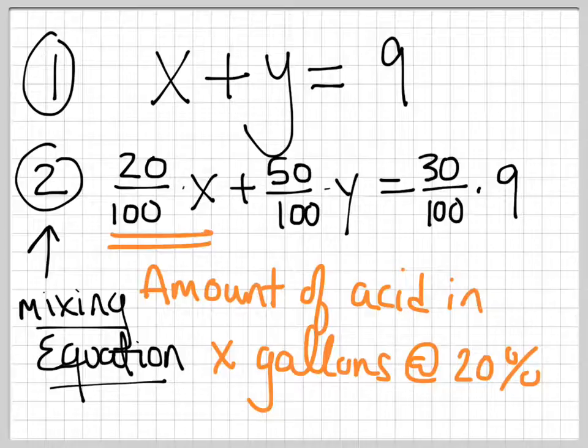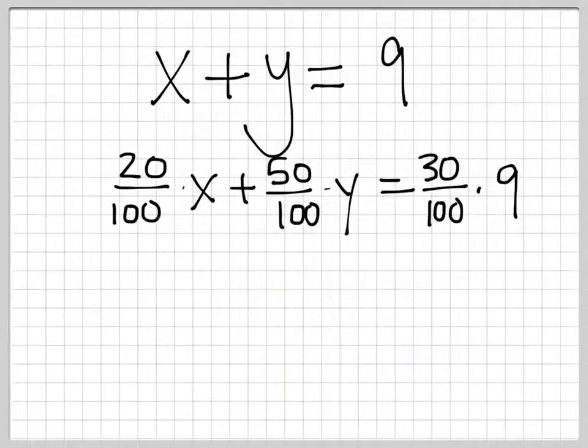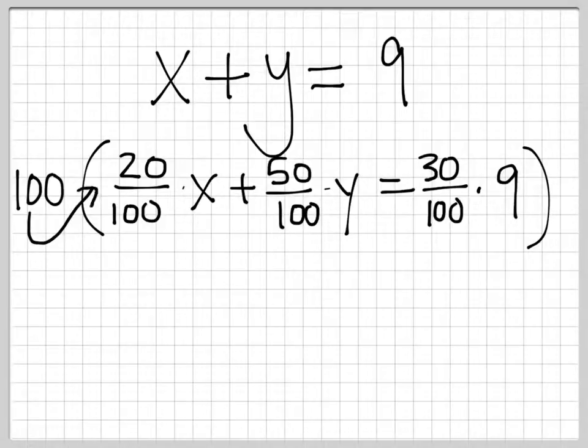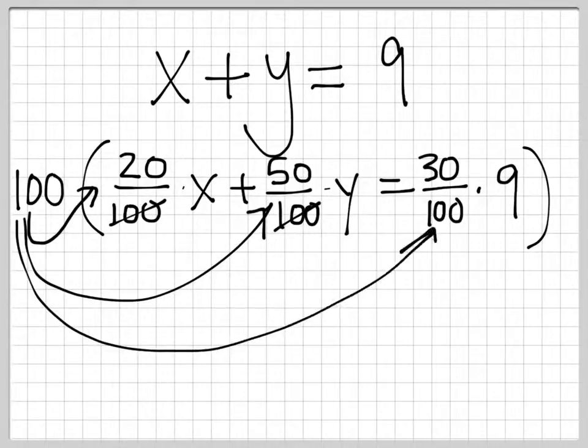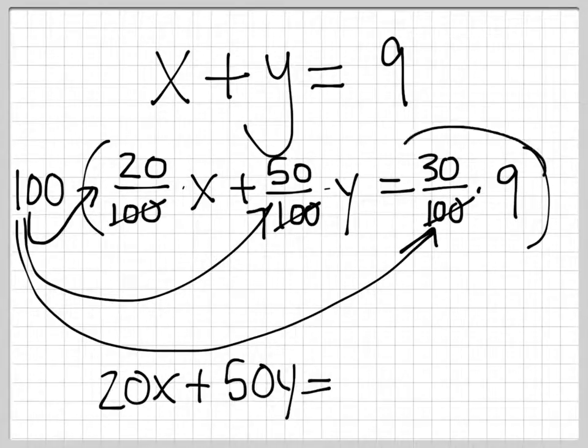And now we have a system of equations. It happens to have fractions, but we can fix that. How do we fix it? The way we fix it is we're going to multiply both sides of this equation by 100. When we multiply 20 over 100 times 100, the 100s cancel. When we multiply 50 over 100 by 100, the 100s cancel. And when we multiply 30 over 100 by 100, the 100s cancel. And the bottom equation becomes 20x plus 50y equals 30 times 9, so that's 270.